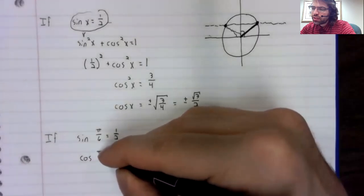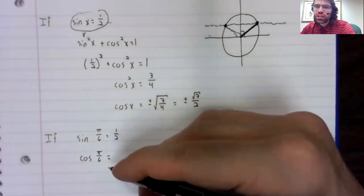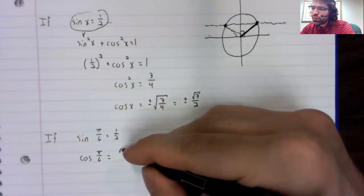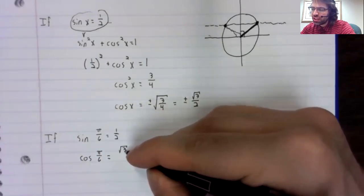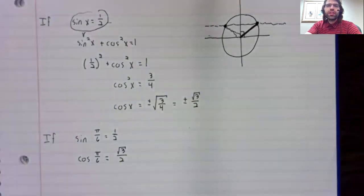And I can say that the cosine of pi over six must therefore be the positive square root of three over two.